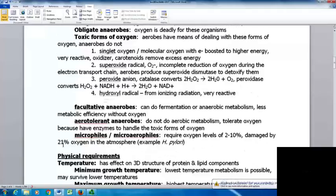Facultative anaerobes can do fermentation or anaerobic metabolism - less efficient without oxygen. They can also do aerobic metabolism and will choose aerobic when possible because it's more efficient. Aerotolerant anaerobes don't do aerobic metabolism but tolerate oxygen because they have enzymes to handle toxic forms, though it's not used in energy production. Microaerophiles require oxygen levels of 2-10% and are damaged by 21% oxygen in the atmosphere. An example is Helicobacter pylori.